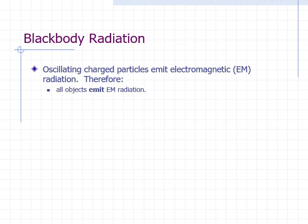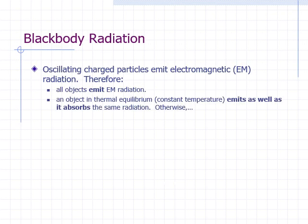Furthermore, if an object is in thermal equilibrium, meaning it is at a constant temperature, then it should emit as well as absorb the same radiation. Otherwise, if an object emits more EM radiation than it absorbs, it would be cooling down — its temperature would be dropping. If it absorbs more than it emits, then its temperature would be increasing.